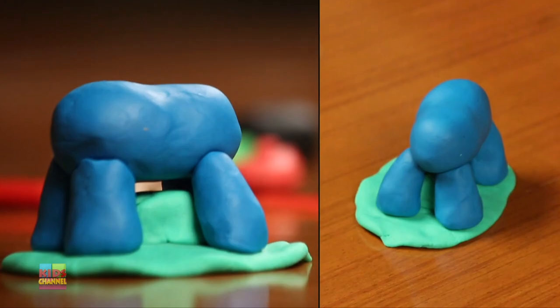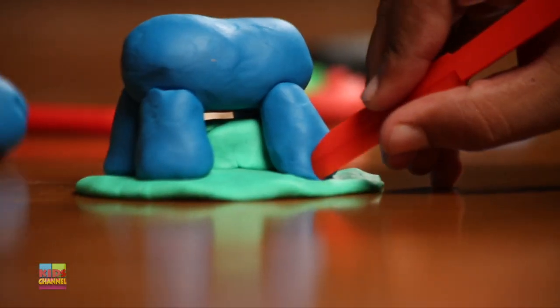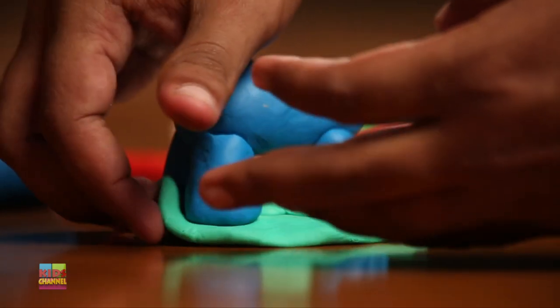Put it on top of the green play-doh base so that it doesn't fall over and it's very solid. How's that looking? You've got really fat legs, huh? When you're happy with that, use the knife to give it some detailing, especially around the feet of the rhinoceros.